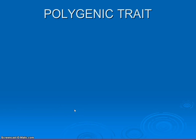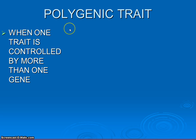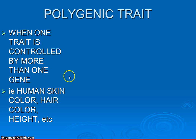So that brings us to our fourth and final type of strange inheritance called polygenic inheritance or polygenic traits. Just as the name implies, it is a trait — there's our word gene — but poly, that prefix means several. It's actually a trait controlled not by one gene, but several — more than one gene. If we think about it in terms of ourselves as humans, the best examples are skin color, hair color, height, eye color — human traits.